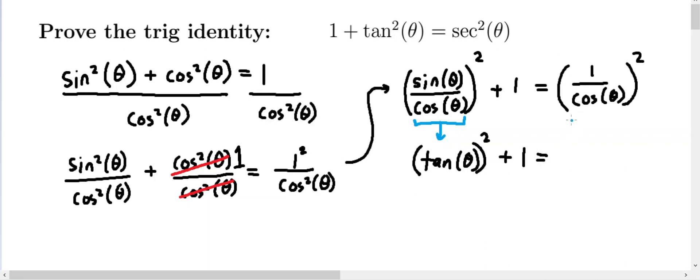And we also have a name for this function, the reciprocal of cosine theta. And so that becomes secant of theta, all being squared.